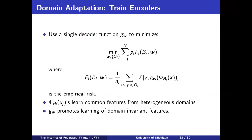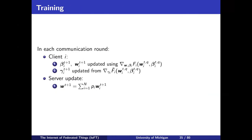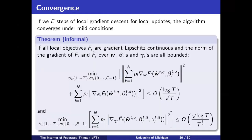We solve this model using distributed gradient descent. It turns out this model has very nice guarantees. The encoders beta_i converge at a rate of 1/T, where T is the number of rounds the global server communicates with clients. For the decoder gamma_i, convergence is at a slightly lower rate — this is the price to pay for personalization.